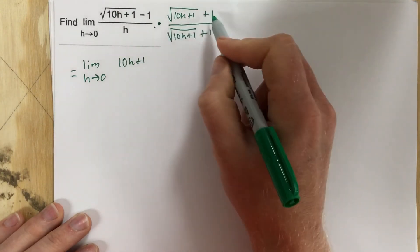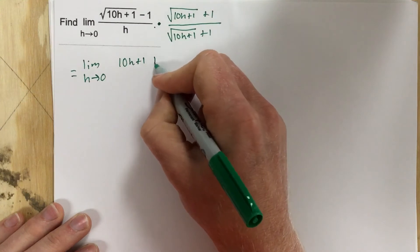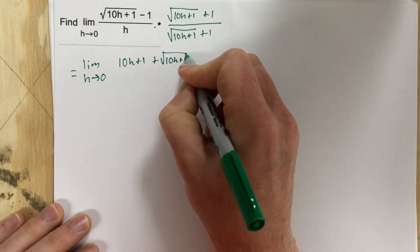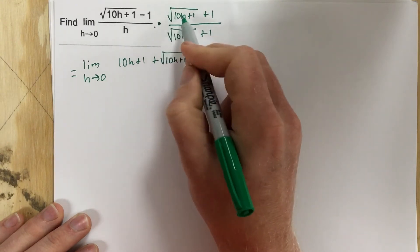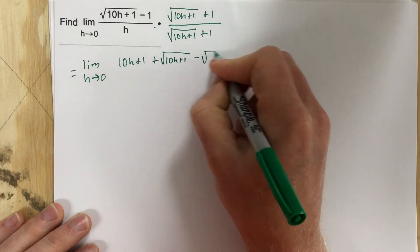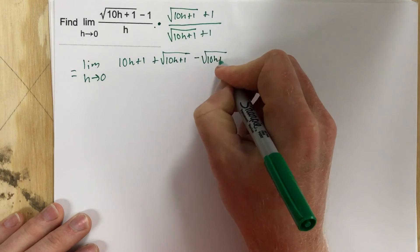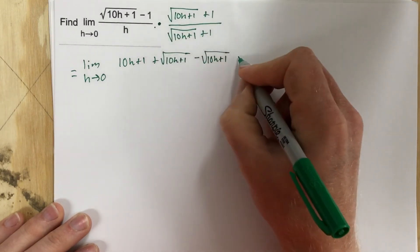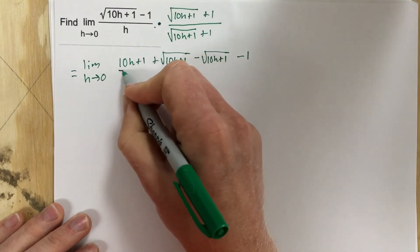When I multiply this times the positive 1, I get plus root 10h plus 1. When I multiply the negative times this, I get minus root 10h plus 1. And then negative 1 times 1 is negative 1. And that's all over.